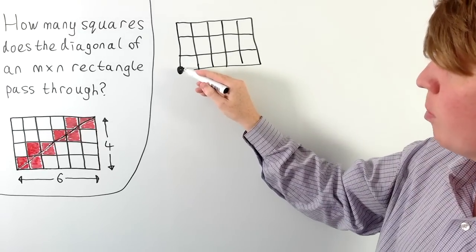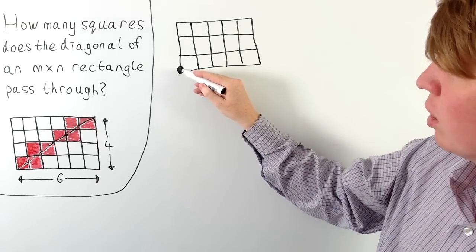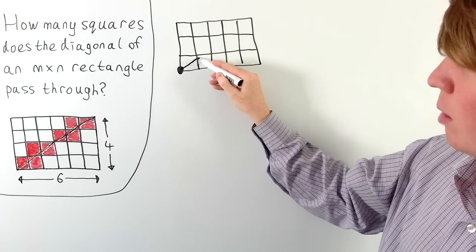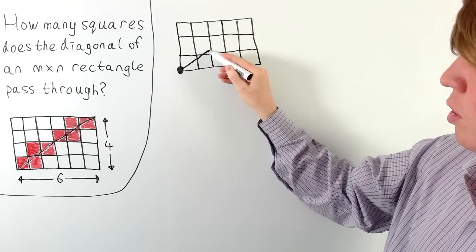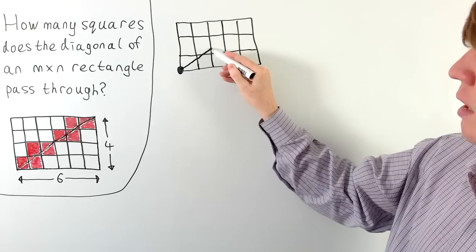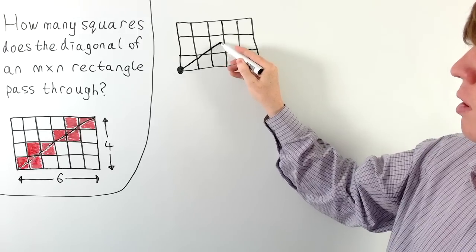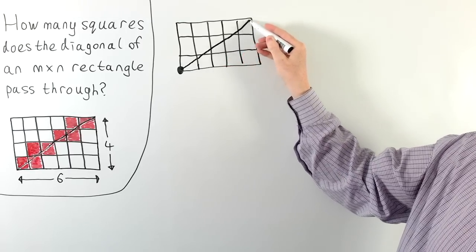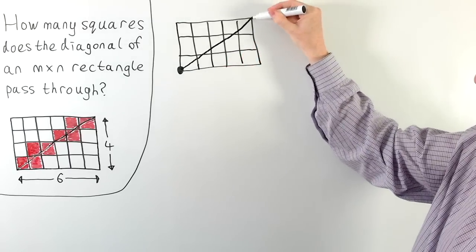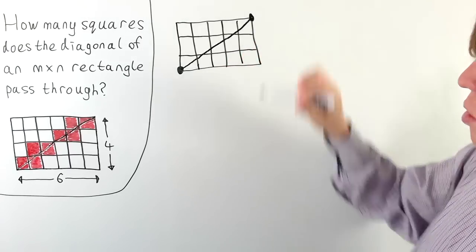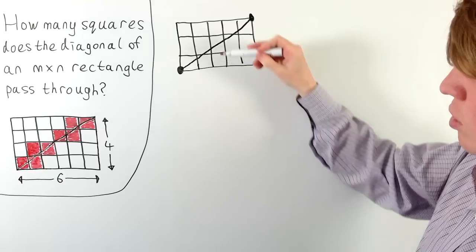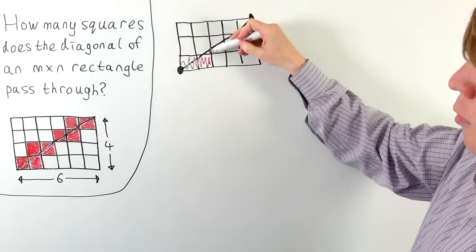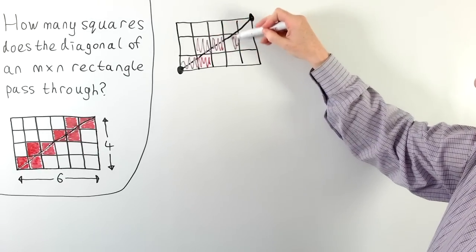Starting in the bottom left corner, then moving along we cross a line into our second square, then into our third, fourth, fifth, sixth, and seventh — giving a total of 7 squares for a 5 by 3 rectangle.